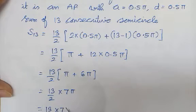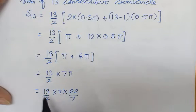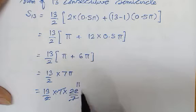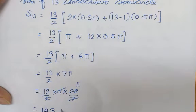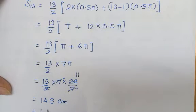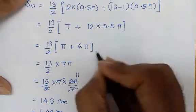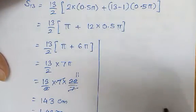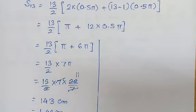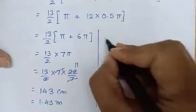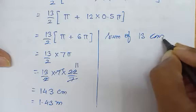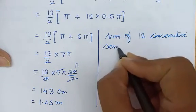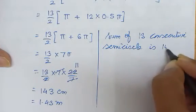So S13 = (13/2) into 7 into (22/7). Ab humne π ki value daal di jo question mein di gayi hai. 7 se 7 kat gaya, 2 se yeh kat gaya, to 11 aa gaya. So 11 se multiply karo: 11 into 13 = 143 centimeter. So the sum of 13 consecutive semicircles is 143 centimeter.